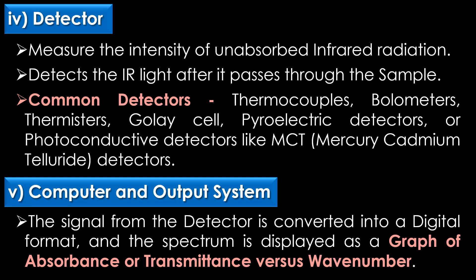The fifth and final part of infrared spectroscopy is the computer and output system. The signal from the detector is converted into a digital format and the spectrum is displayed as a graph of absorbance or transmittance versus wave number.